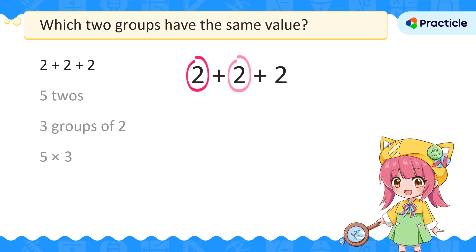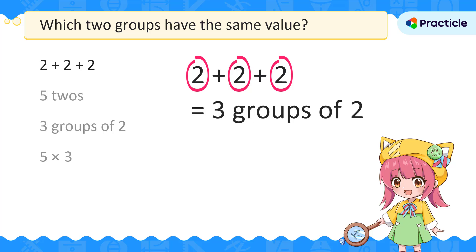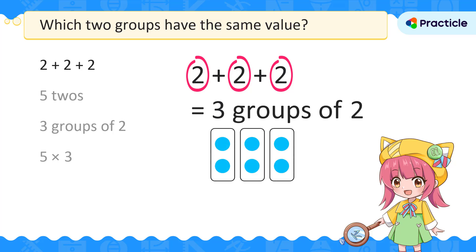Adding these numbers repeatedly is the same as multiplying. 2 plus 2 plus 2 is the same as 3 groups of 2, or 3 times 2. This gives us an answer of 6.